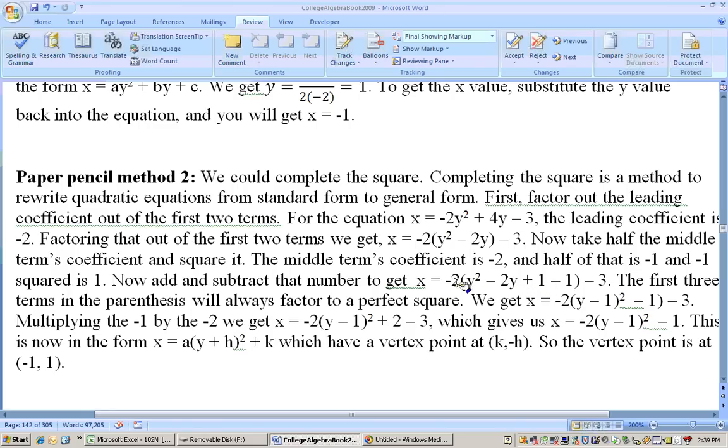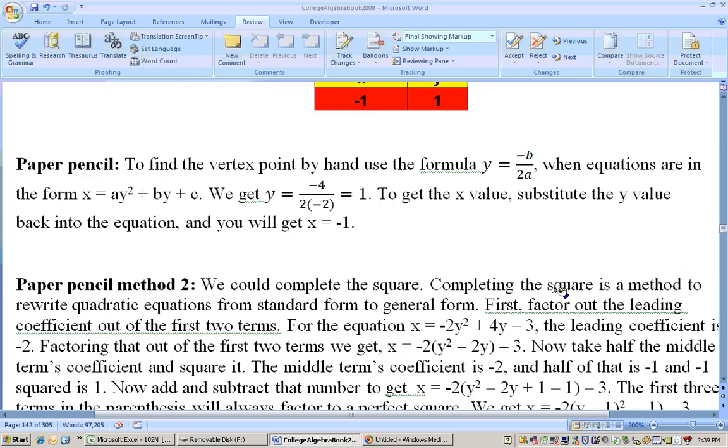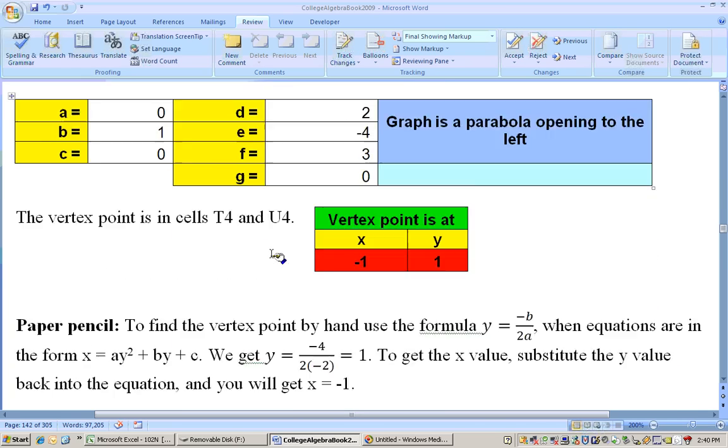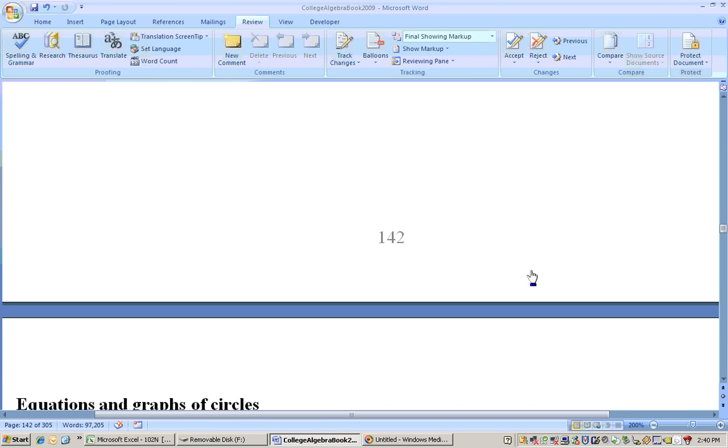The reason you do that is because this bit right here is a perfect square. This will always factor into y, then whatever half of that middle term was. What was half that middle term? Minus 1. So it's going to factor into (y - 1) squared, and then what do you have left over here? Well, -2 times -1. Well, I'll leave it in here. -2 times that -1 minus 3. Now, you combine those. -2 times that -1 is 2. 2 minus 3 is a -1. So now it's in that perfectly squared form, and so the vertex point will be at k, -1, then -h. So that would be 1. (-1, 1). I think that's what we got here. (-1, 1). So you pick your way of doing this, either the Excel way or by the vertex formula way or by completing the square. And next, we're going to go into graphs of circles.